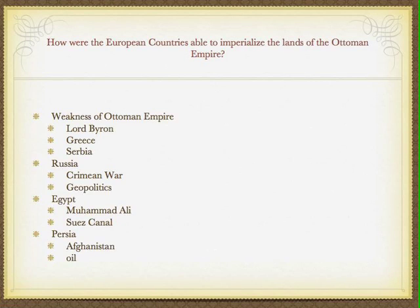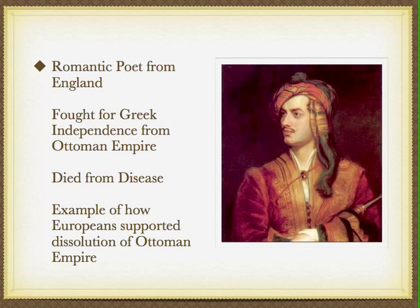This is lecture number 25. We're going to discuss how European countries were able to imperialize the lands of the Ottoman Empire. We'll talk about the weaknesses of the Ottoman Empire, then Russia, Egypt, and Persia.